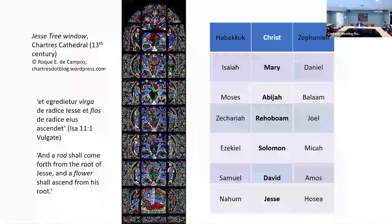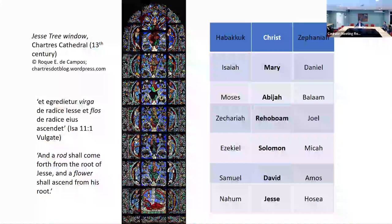The striking thing in Matthew is that the mothers are not the expected mothers — Sarah, Rebecca, Rachel — but Tamar and Rahab and Ruth and the wife of Uriah, and Mary.